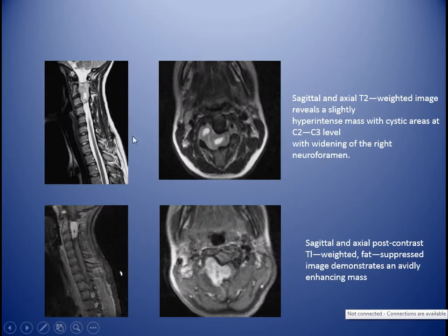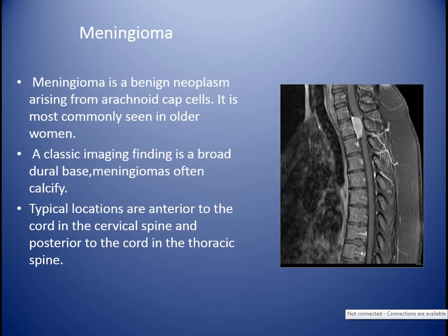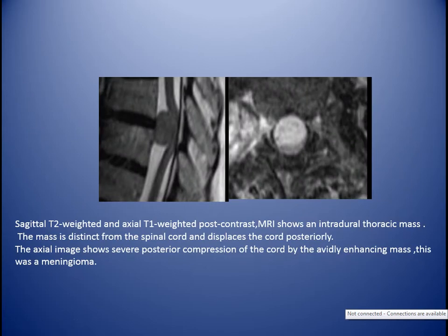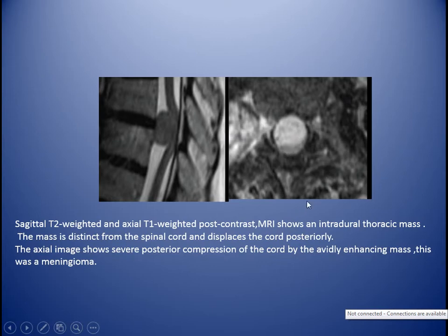Sagittal and axial T2 MRI reveals a hyperintense mass at the level of C2-C3, causing widening of the neural foramina. Post-contrast T1 fat-suppressed image demonstrates an avidly enhancing mass. Meningioma is a benign neoplasm arising from arachnoid capsule cells, most commonly seen in older women. The classic imaging finding is broad dural-based meningioma, often calcified. Typical locations are anterior to the cord in the cervical spine and posterior to the cord in the thoracic spine. The T2 and axial T1 post-contrast images show an intradural extramedullary mass displacing the cord posteriorly with marked enhancement.